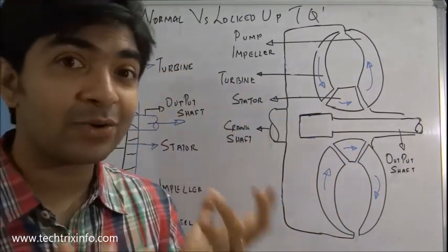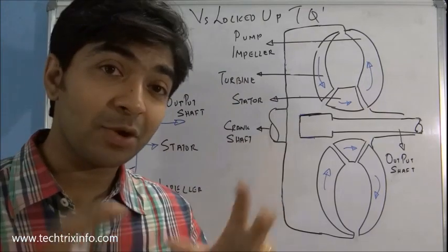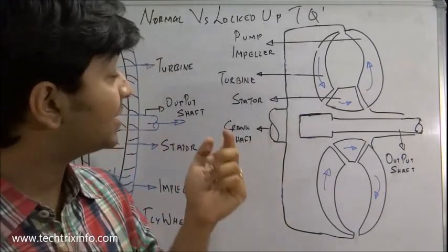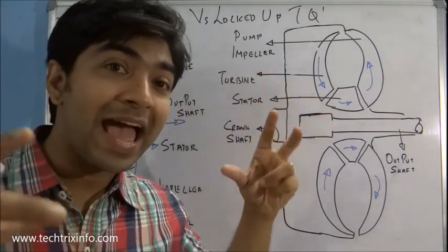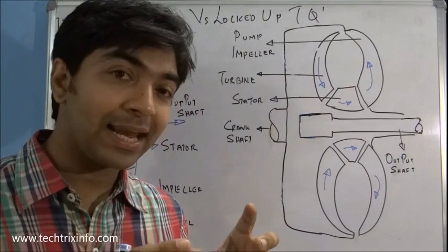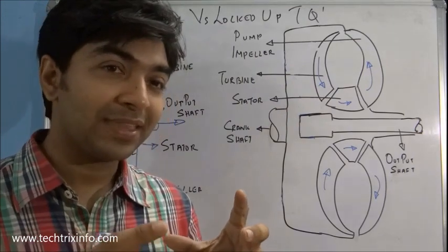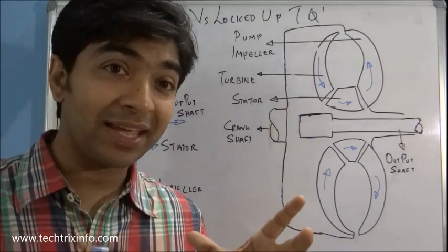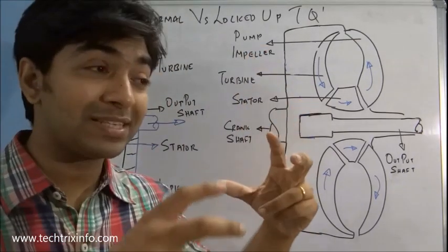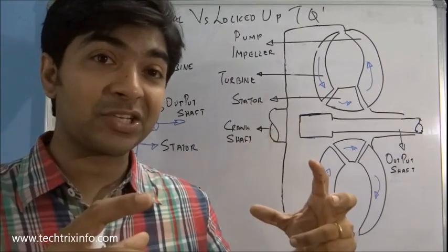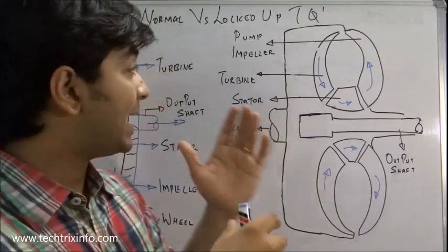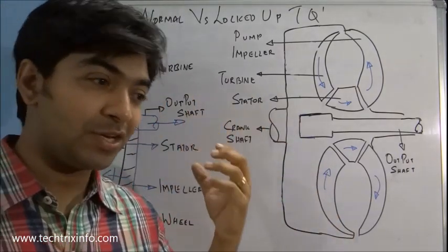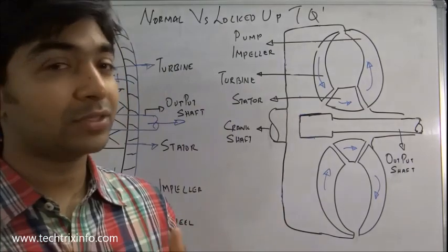A normal torque converter is a hydraulic coupling with no mechanical linkage. But a locked-up torque converter has a mechanical linkage, meaning there is no fluid coupling at the point of lock-up. It is a mechanical connection — a mechanical torque transfer from the engine towards the gearbox.